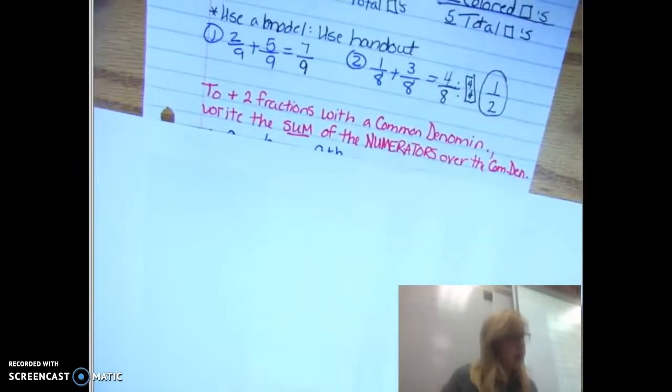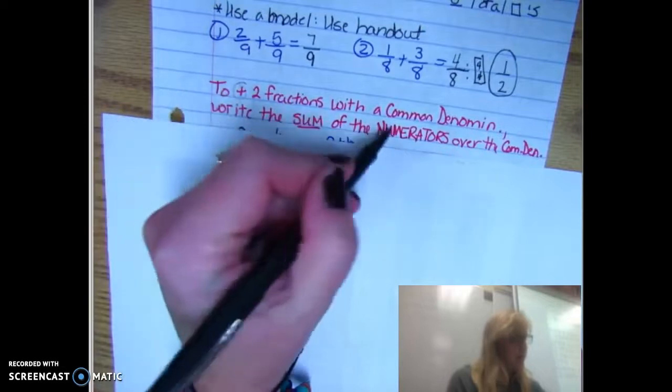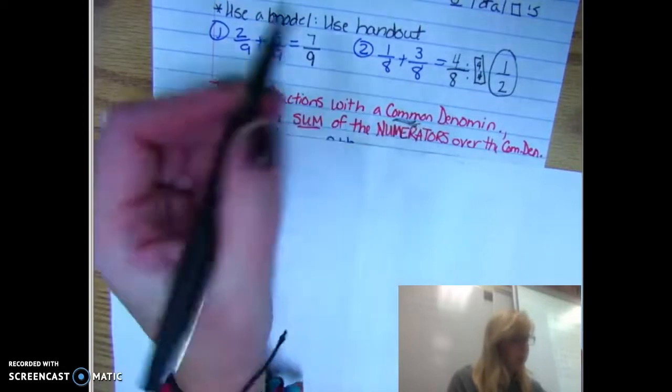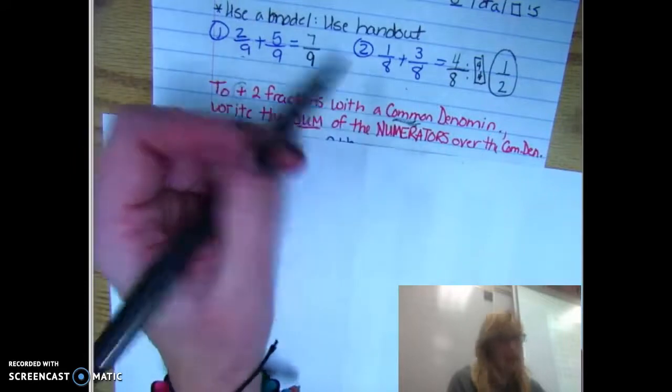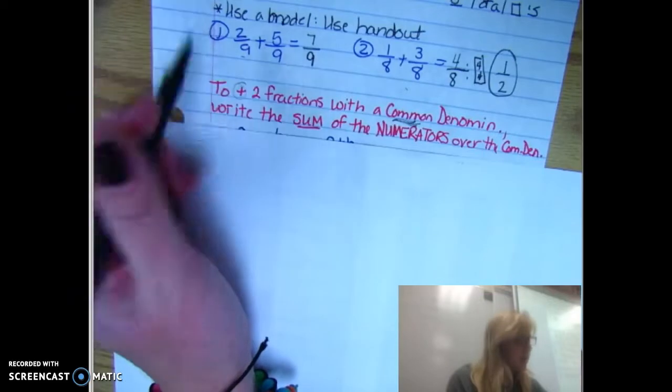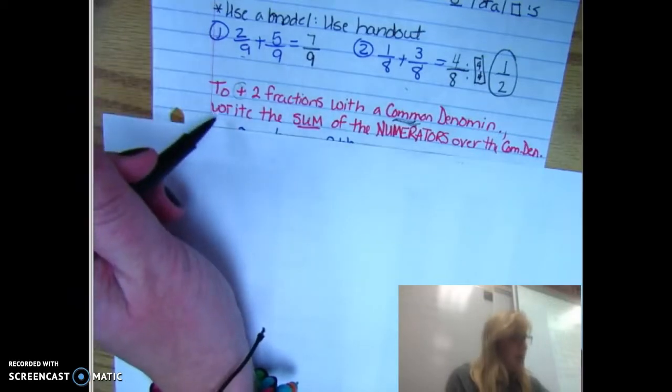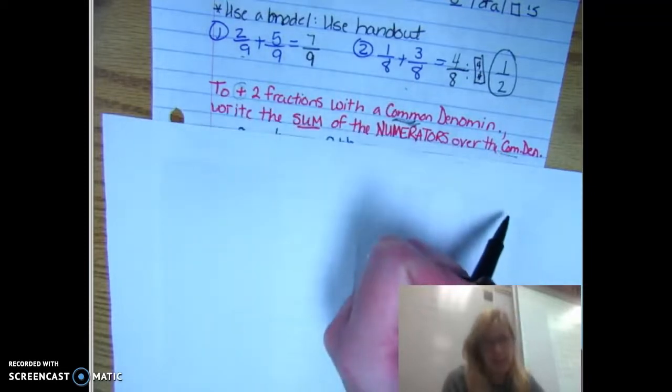So all you need to remember for this, if you have this in your notes, to add two fractions with a common denominator. Remember, it has to be both out of fifths, both out of ninths, both out of eighths, both out of 1,100ths. The denominators have to be the same.